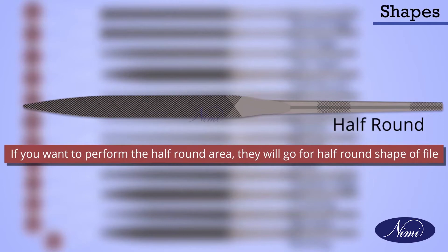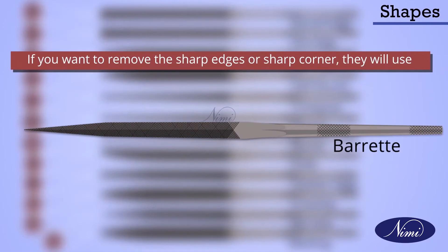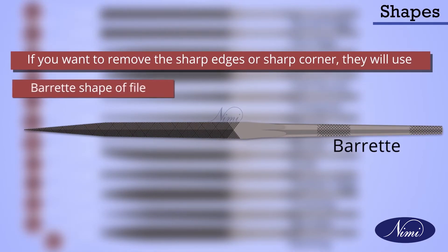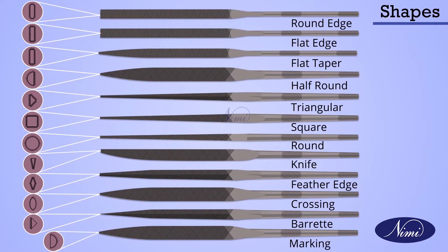If you want to work on a half round area, you use the half round shape of file. If you want to remove sharp edges or sharp corners, you use the barret shape of file. Like that, according to the profile where you are going to file, you choose the different shapes.